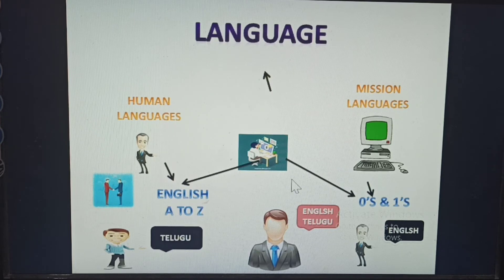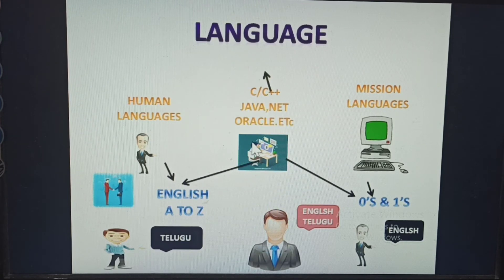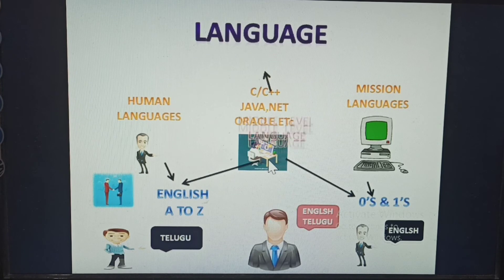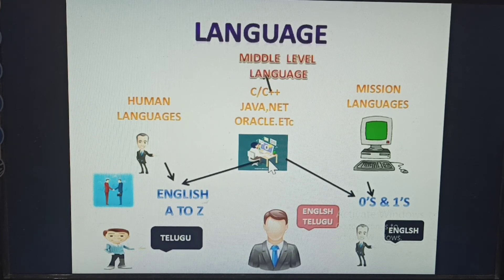The same thing with the computer also. One language is called C, C++, Java, .Net, Oracle, etc. These are all the middle languages. They communicate between the human language and the machine language. C has a separate name — it is called a middle-level language. The middle-level language communicates and converts the human language into binary.